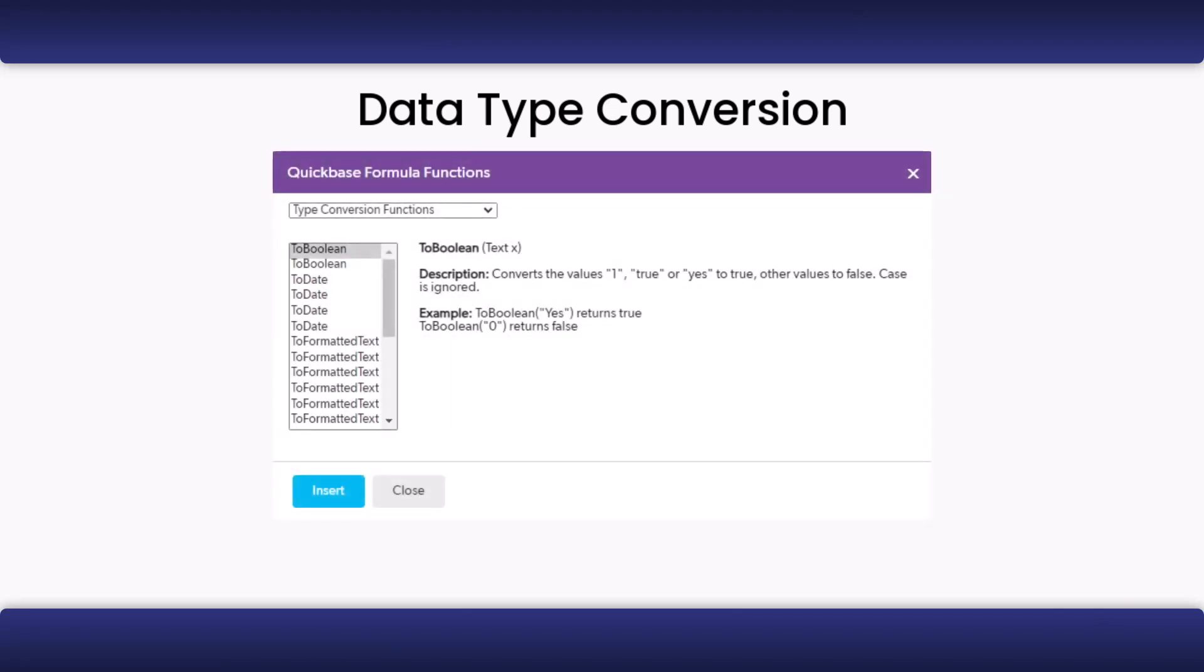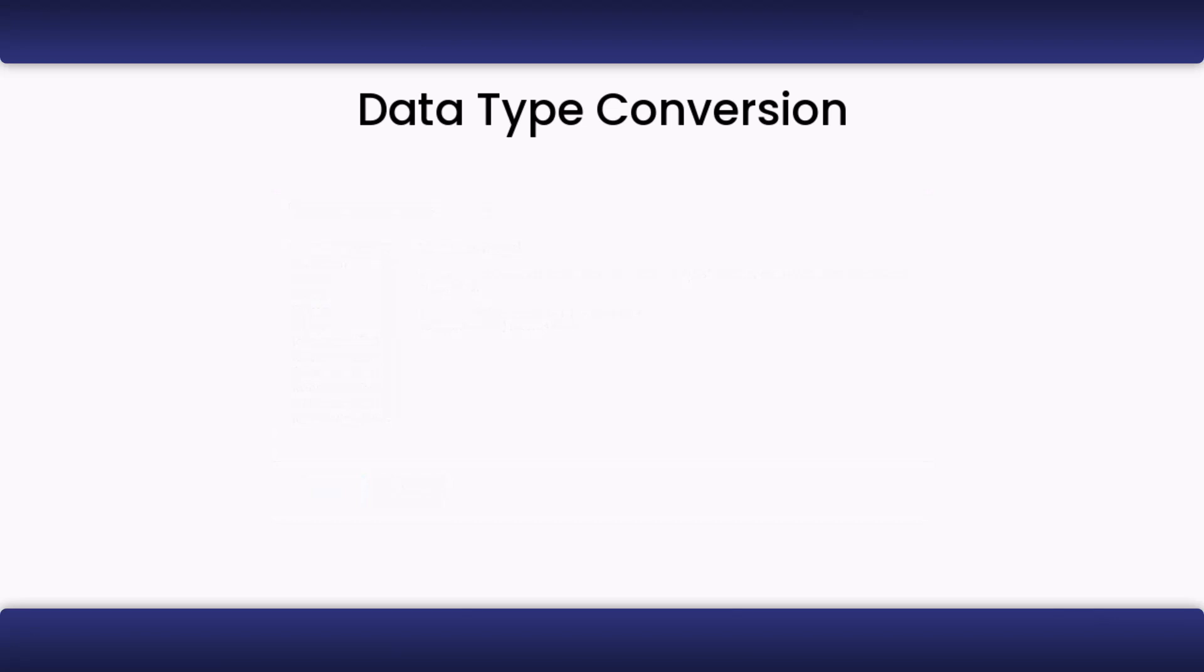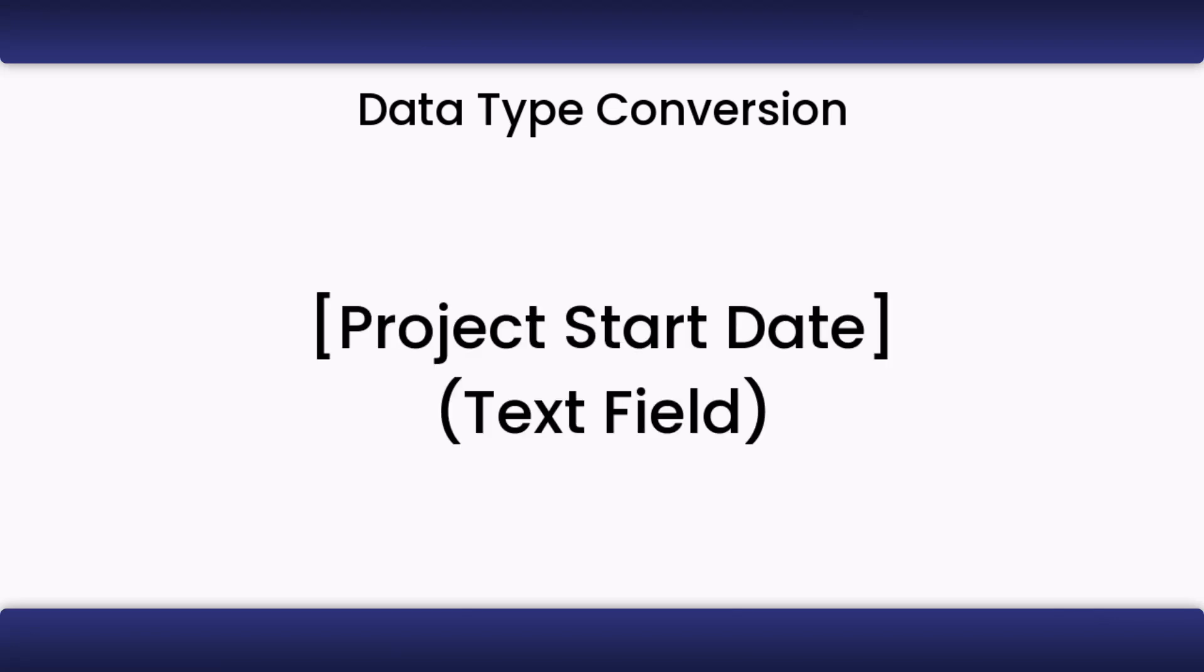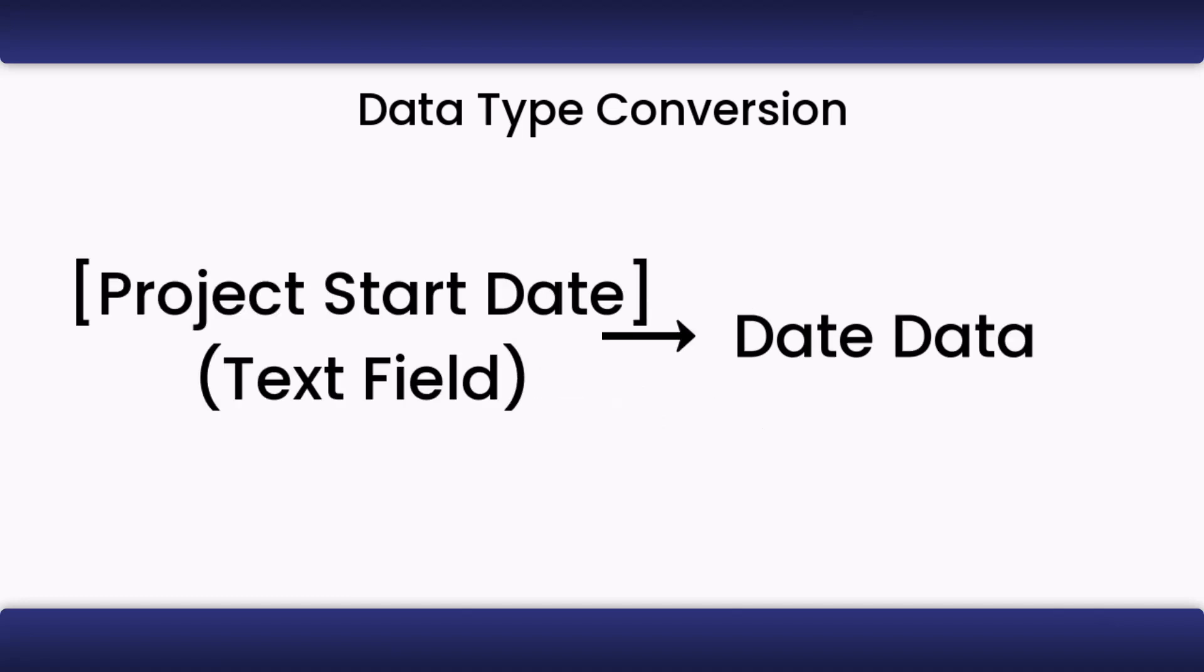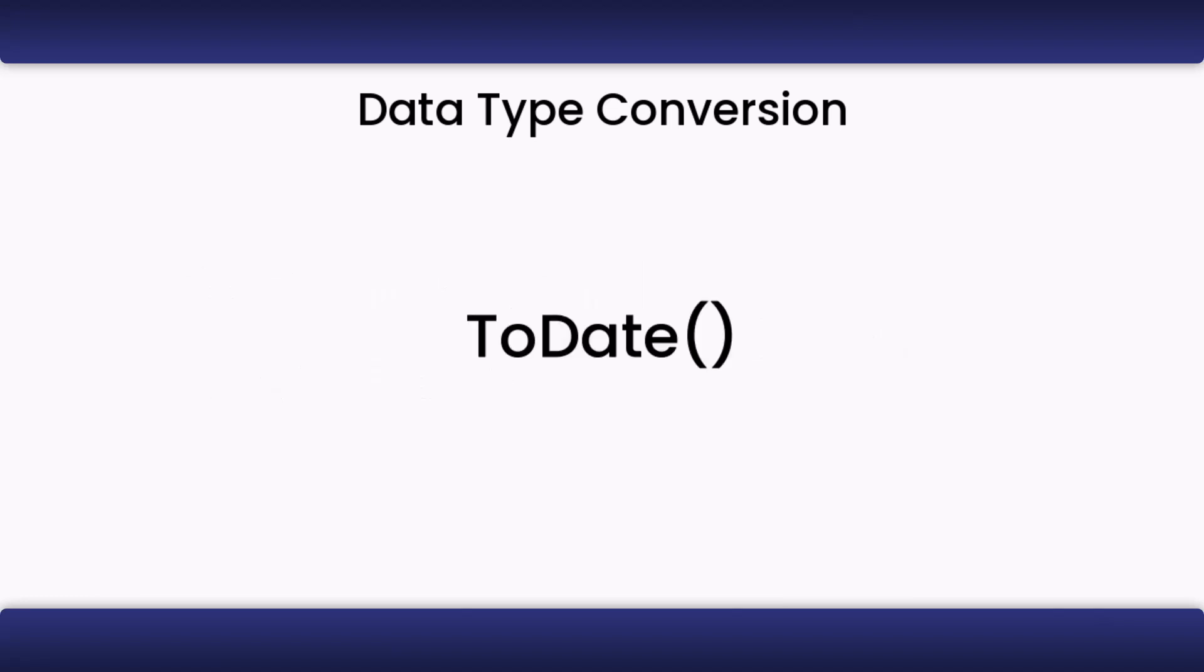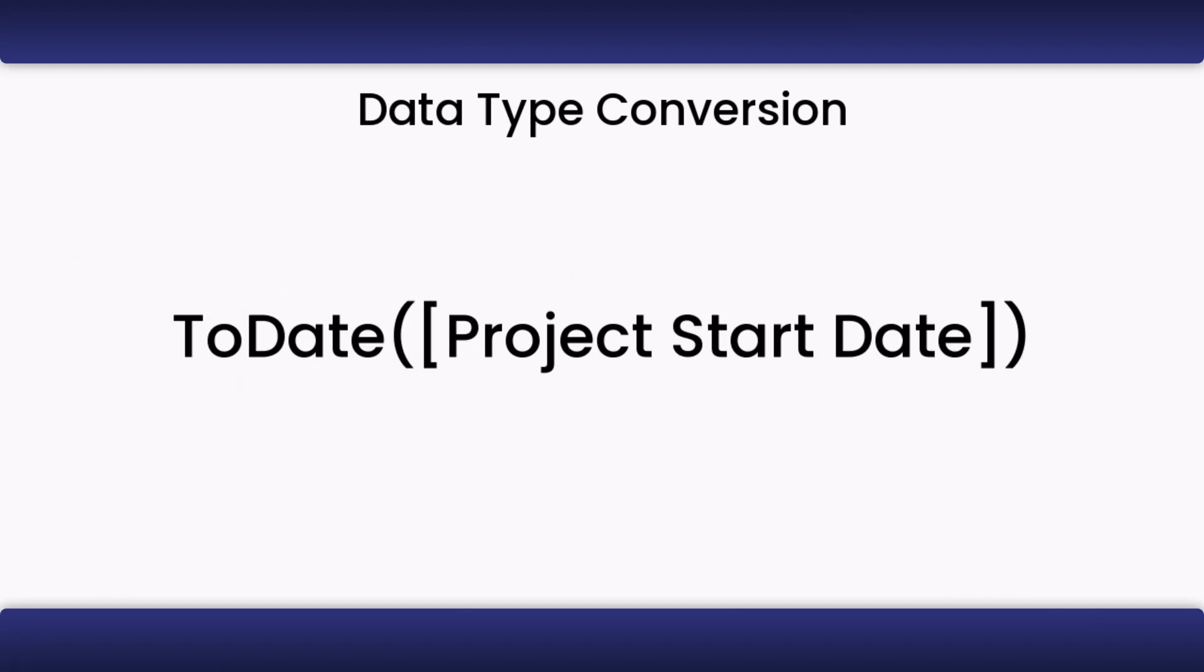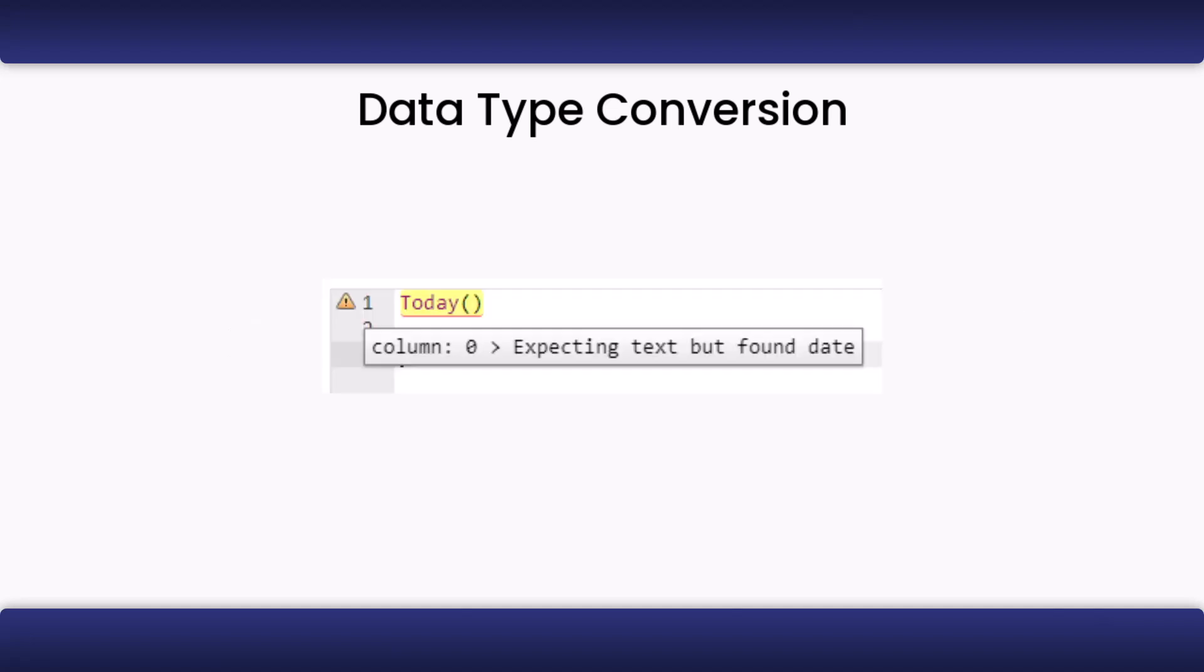Sometimes you may need to convert some data from one type to another. This is called a type conversion. There are specific functions that will convert data, called type conversion functions. You can find them in the formula function dialog, which will be covered in a later section. For example, let's say that you had a text field with dates in it and wanted to convert it to date data in order to manipulate it with other date functions. You would type to date project start date. This will convert the project start date's data into date type data. You will commonly get errors for having the incorrect data type, so type conversions are essential.